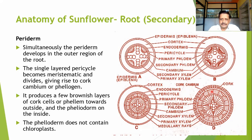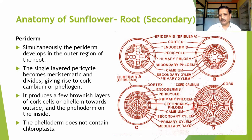The third stage is the development of the periderm. The periderm is the outermost layer derived from cambium activity, and this cork tissue starts developing. The periderm protects the root during growth.